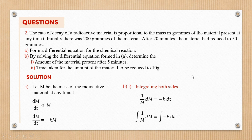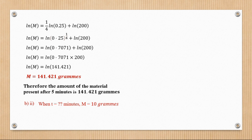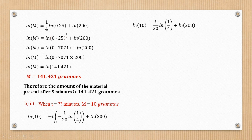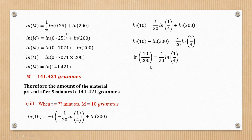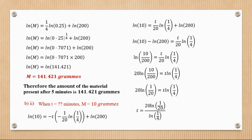For part b(ii), find the time for m to reduce to 10 grams. Substituting m = 10 into equation one: ln 10 = −kt + ln 200. So ln(10/200) = −kt, giving ln(1/20) = −kt. Making t the subject: t = 20·ln(1/20) / ln(1/4), which equals approximately 20·ln(1/20) over ln(1/4).